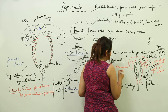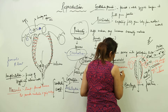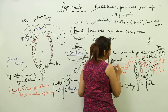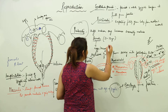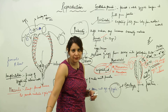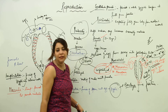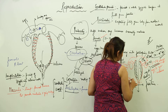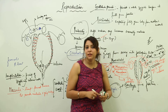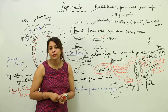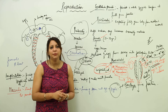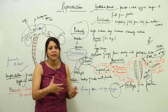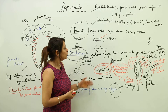The time when menstruation starts is called menarche, and the stoppage of the menstrual flow is called menopause. Menarche occurs at around 11 to 13 years of age when a female attains maturity. Menopause occurs at approximately 50 years of age in females, after which the female is no longer capable of producing eggs and cannot deliver a baby.